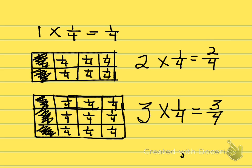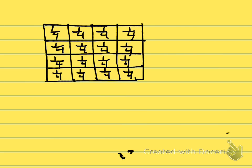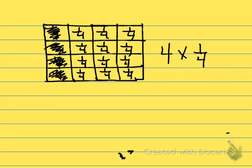Let's try this one more time just to make sure we've got it. Let's draw another model. This time, boys and girls, let's take a look at this model. I know I have one, two, three, four times one-fourth. I'm going to go back in and cover up one-fourth in each one of these bars, which represent one whole. And four times one-fourth equals what, boys and girls? You're absolutely right. Four times one-fourth equals four-fourths.